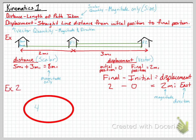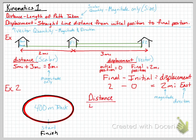Let's do another example using a track. Most people have run on or seen a track that goes around a football field, which is typically 400 meters around. You've got an oval shape that is 400 meters, and you start at one point, travel around the track — the black line represents your path — and finish at the exact same point. If I ask your distance, the length of the path you took is 400 meters.